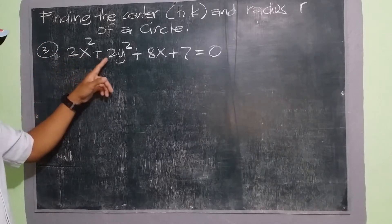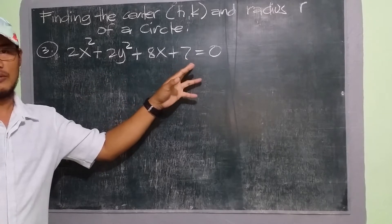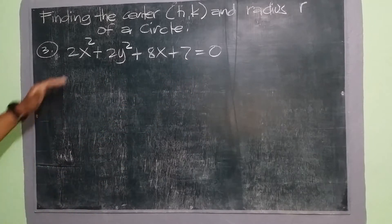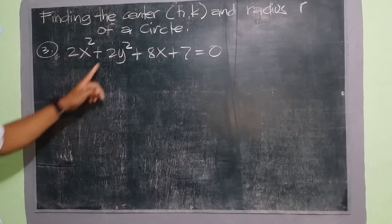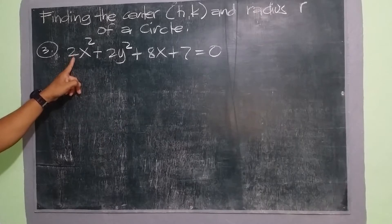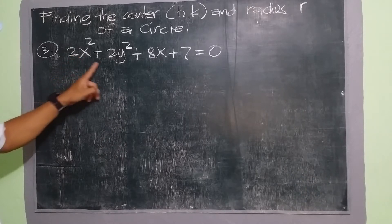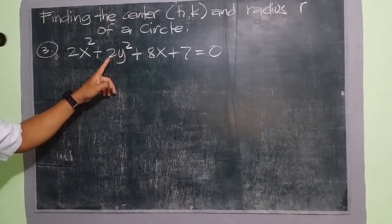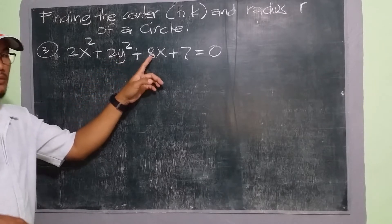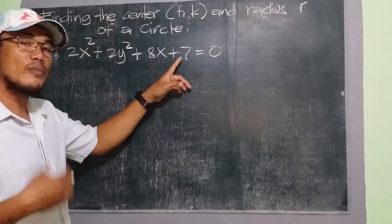We have 2x squared plus 2y squared plus 8x plus 7 equal to 0. Now to solve this one, as you can see, 2x squared is divisible by 2, 2y squared is also divisible by 2, and 8x is also divisible by 2, and 7 can also be divided by 2.